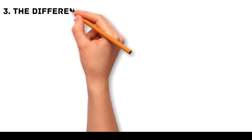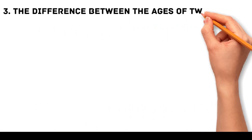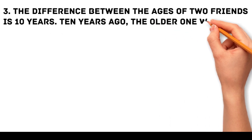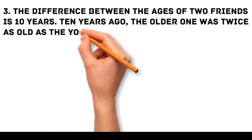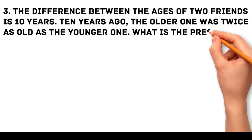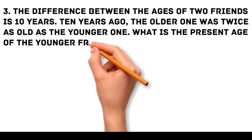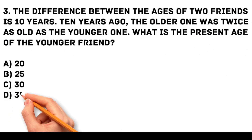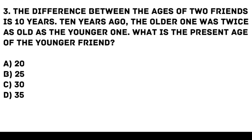Problem 3. The difference between the ages of 2 friends is 10 years. Ten years ago, the older one was twice as old as the younger one. What is the present age of the younger friend? a. 20, b. 25, c. 30, d. 35.